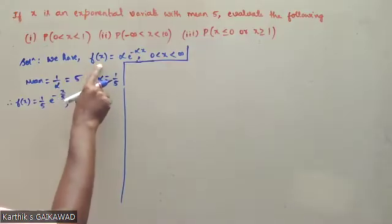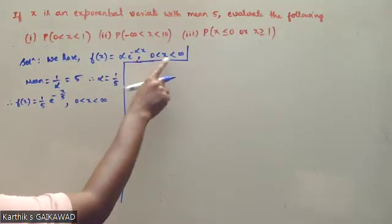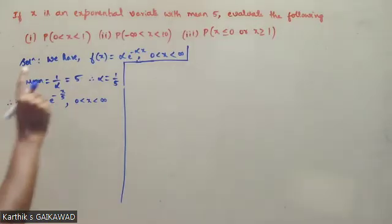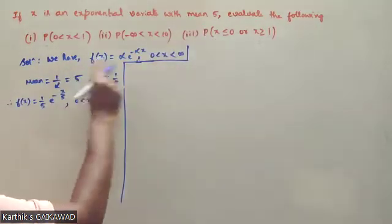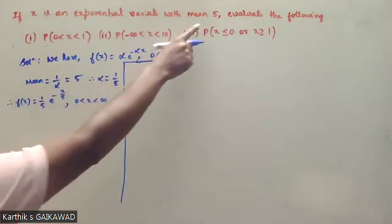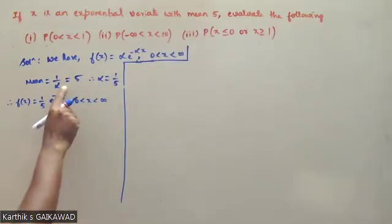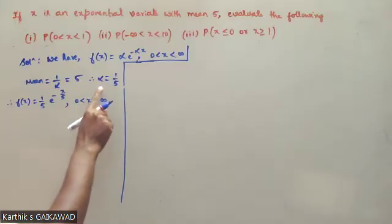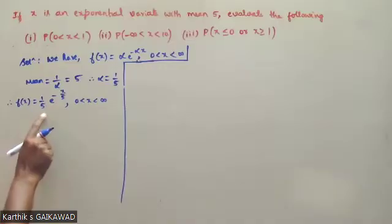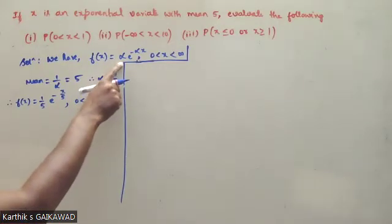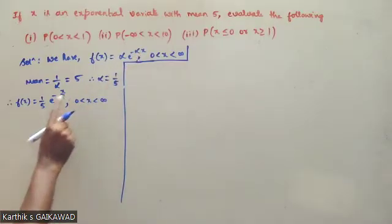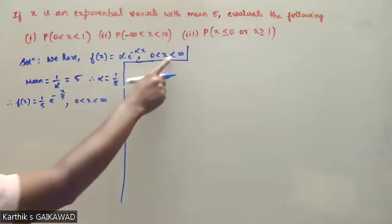We have f(x) equals alpha e to the power minus alpha x, for x between 0 to infinity. Mean is equal to 5, so 1 by alpha equals 5, therefore alpha equals 1 by 5. Thus f(x) equals 1 by 5 times e to the power minus x by 5, for x from 0 to infinity.